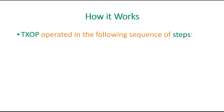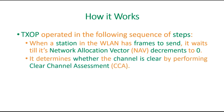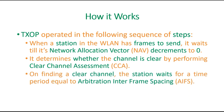TXOP basically follows certain sequence of steps. First, when a station wants to send some frames, it has to wait till its NAV becomes zero. When the medium is busy, the NAV's value will be non-zero, so it has to wait. As it decrements over time and once it reaches zero, the station is ready to send frames. Then it determines whether the channel is clear or not by following a method called clear channel assessment, or CCA in short.